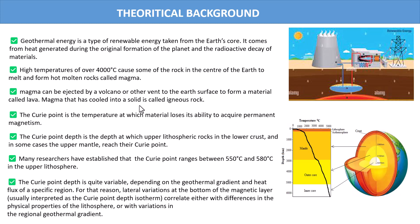The Curie point depth is the depth at which the upper lithospheric rocks in the lower crust — and in some cases the upper mantle — reaches the Curie point. From the Curie depth, the derivative of temperature change at any point on the Earth's surface as you go down is what is called the geothermal gradient. From the geothermal gradient we get the heat flow, which we'll talk more about when we come to the interpretation.